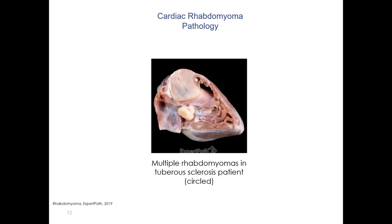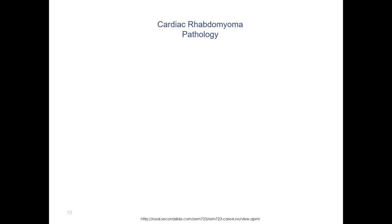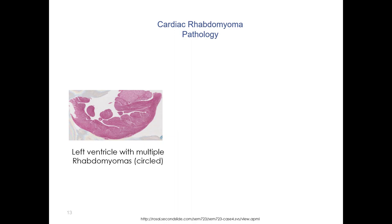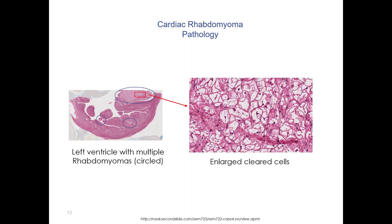Let's take a look at the pathology. Here is the heart — you can see there are multiple rhabdomyomas. Let's take a look at the histology. Here's the left ventricle with the rhabdomyoma circled. On high power, you can see the tumor is composed of enlarged, cleared cells. Sometimes there are little wisps of cytoplasm that go from the nucleus to the edge of the cell, and these are called spider cells.